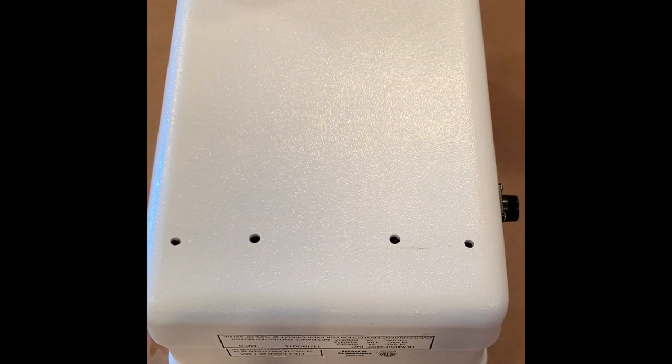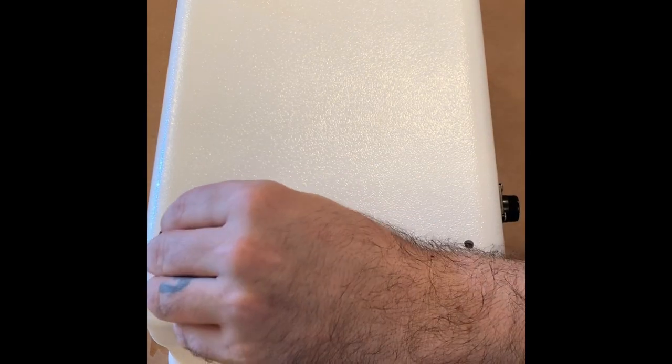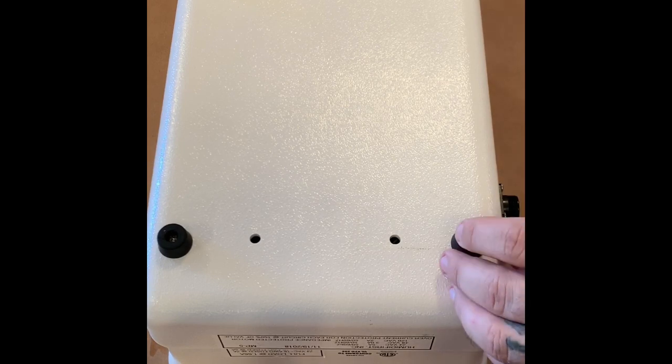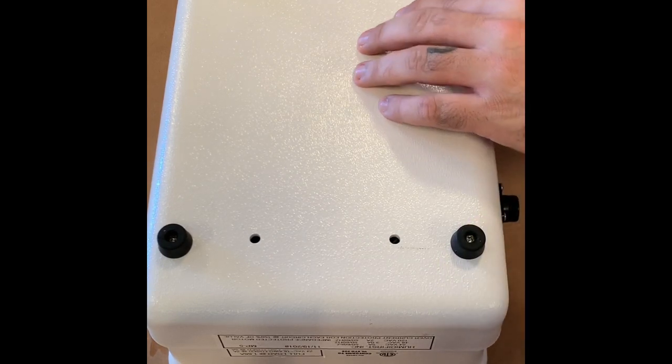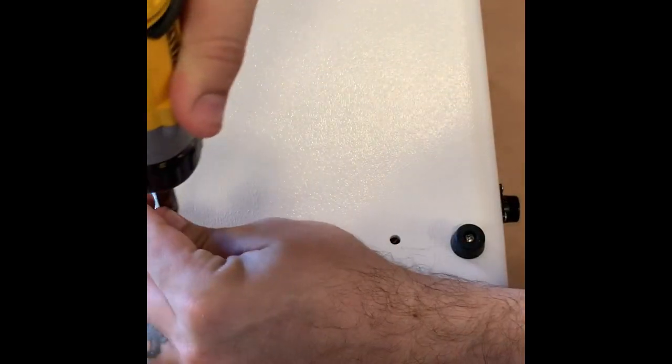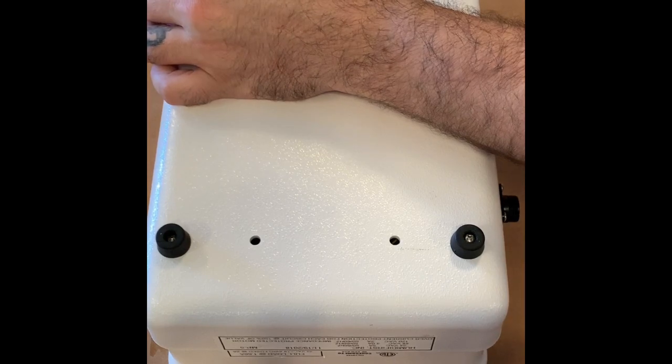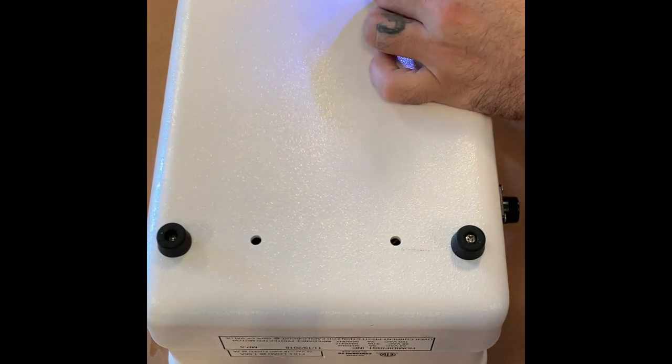You will then take the four black feet that we removed at the beginning of this video and place them back into the same position in which we took them out. Then tighten each one to make sure the bottom pan is secured to the water pan.